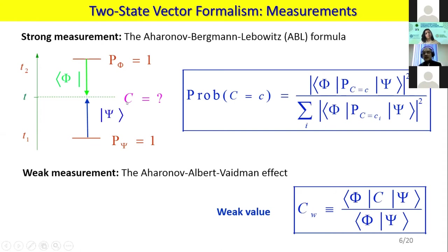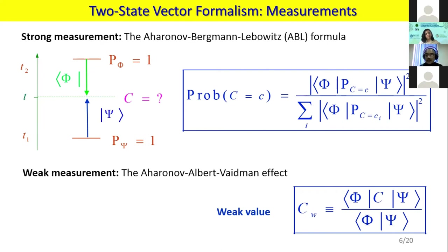We want to make a measurement on observable C. This is the equation — the formula given by Aharonov, Bergmann, and Lebowitz. By this formula, we make a measurement on C, which is in between the post-selected and pre-selected state.